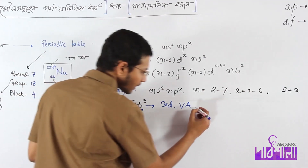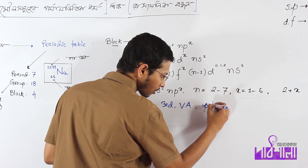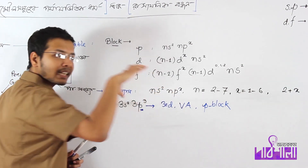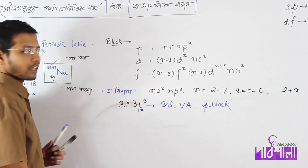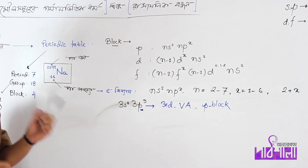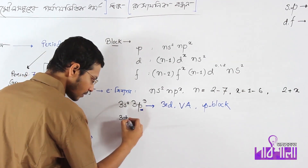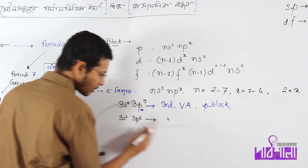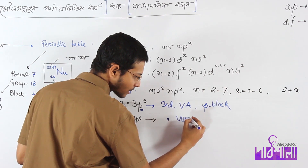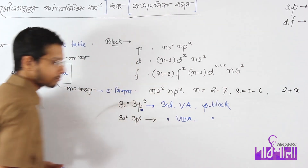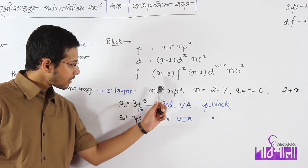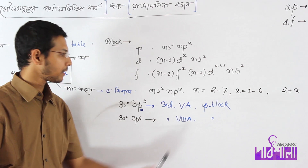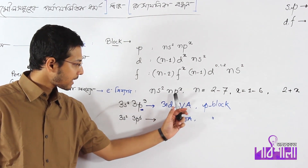So for the P-block, it is very simple: 2 plus x, where 2 is the default value and x is the independent variable representing the number of p electrons. This gives you the group number.